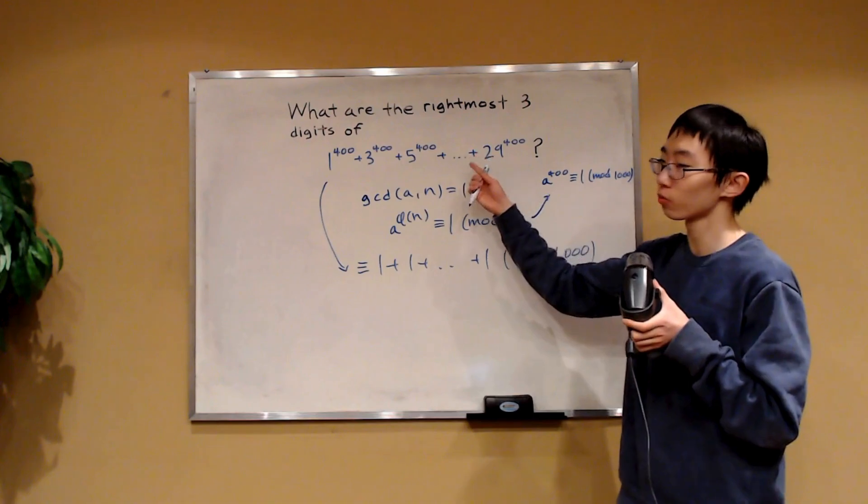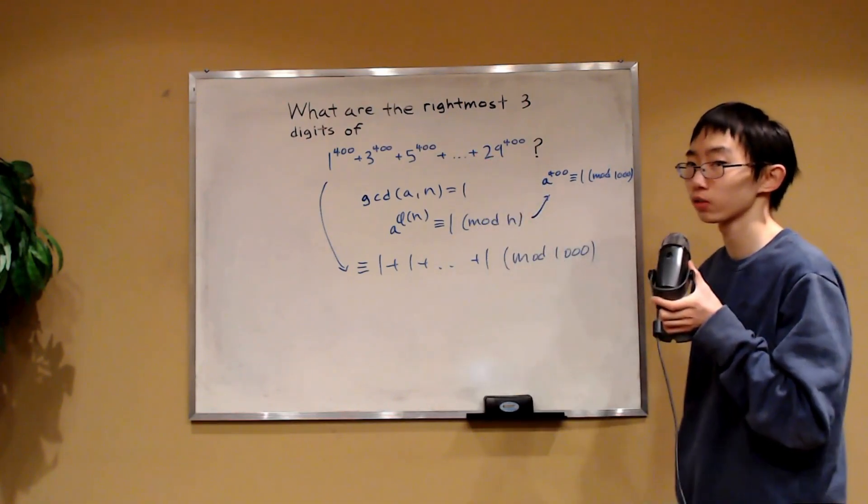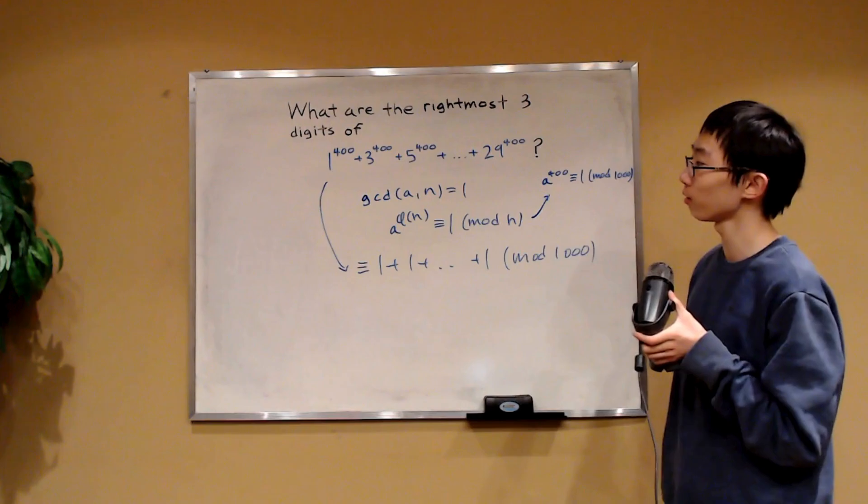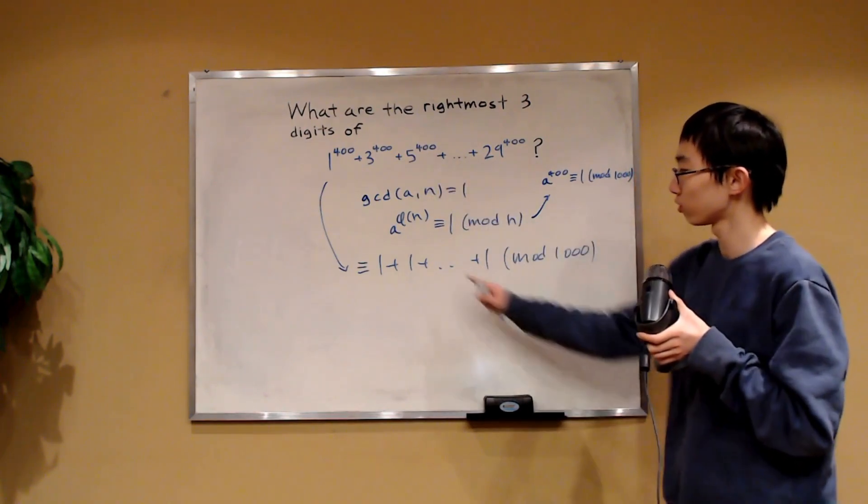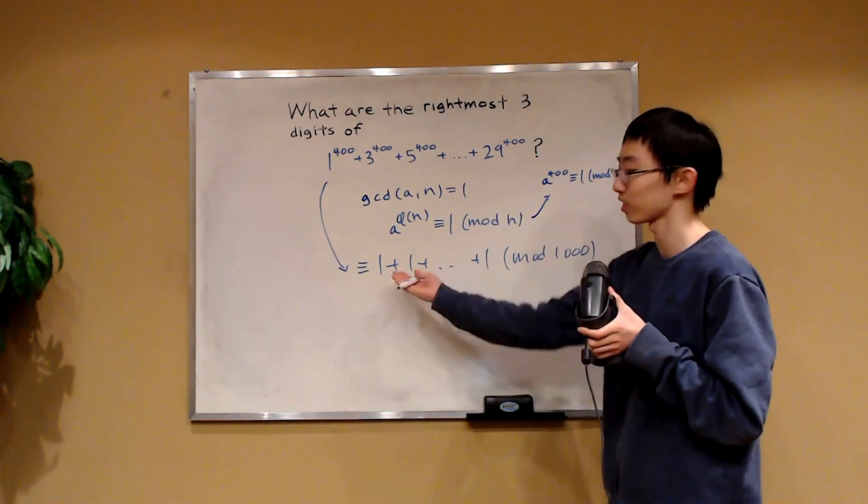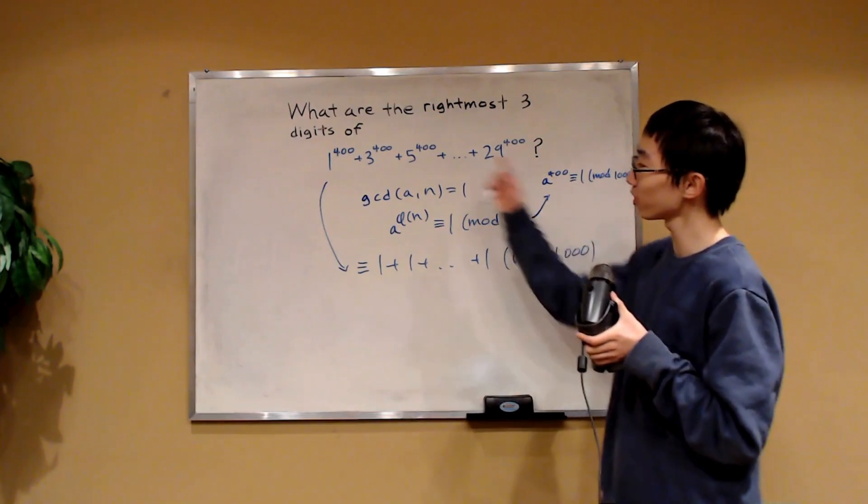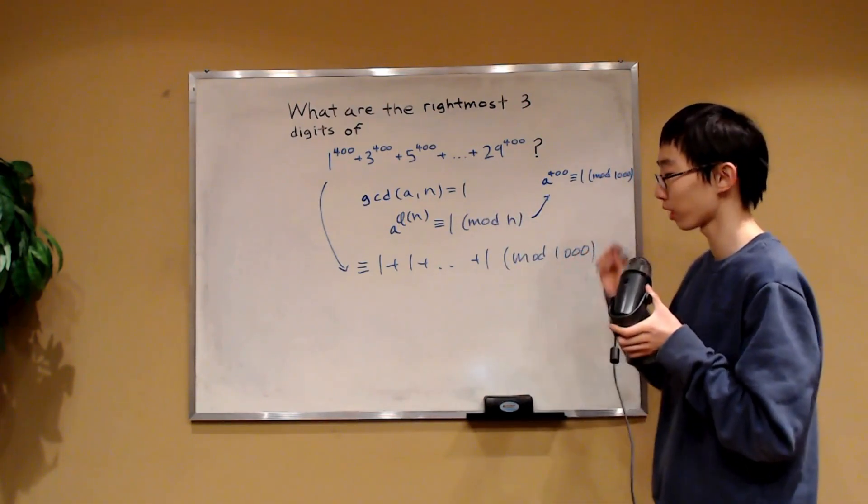There are some numbers in here which are not relatively prime to 1,000. Particularly, they are the numbers with a factor of 5 such as 5 to the 400. So this is actually wrong. This is not it. However, there are only three numbers over here which are not relatively prime.